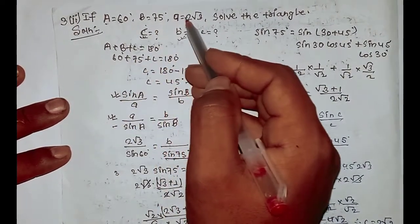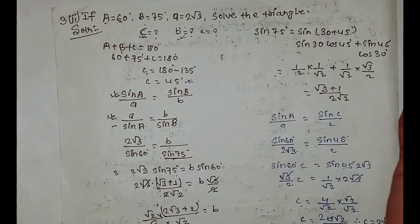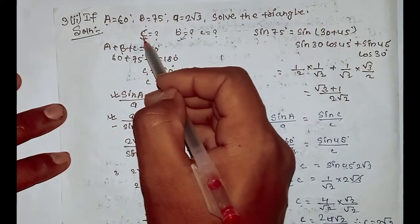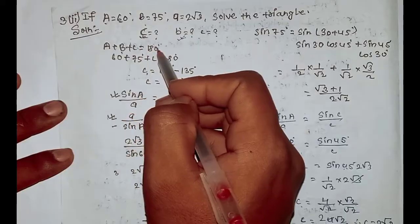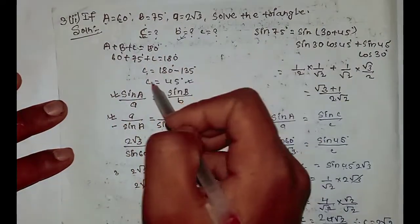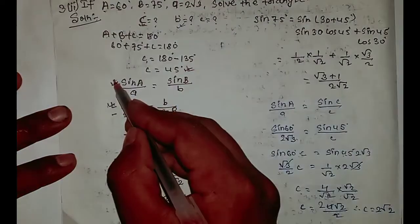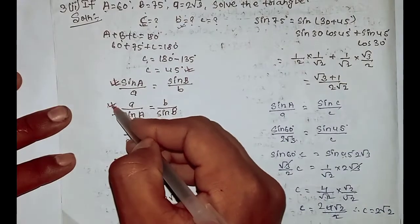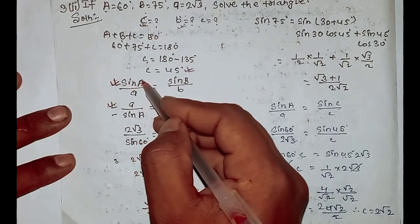Second problem: c equals 75 degrees, a equals 2 root over 3 — solve the triangle. We find the remaining angle: A plus B plus C equals 180 degrees. With A equal to 60 degrees and C equal to 75 degrees, B equals 180 minus 135, giving B equals 45 degrees. Now we make a formula to find the sides.